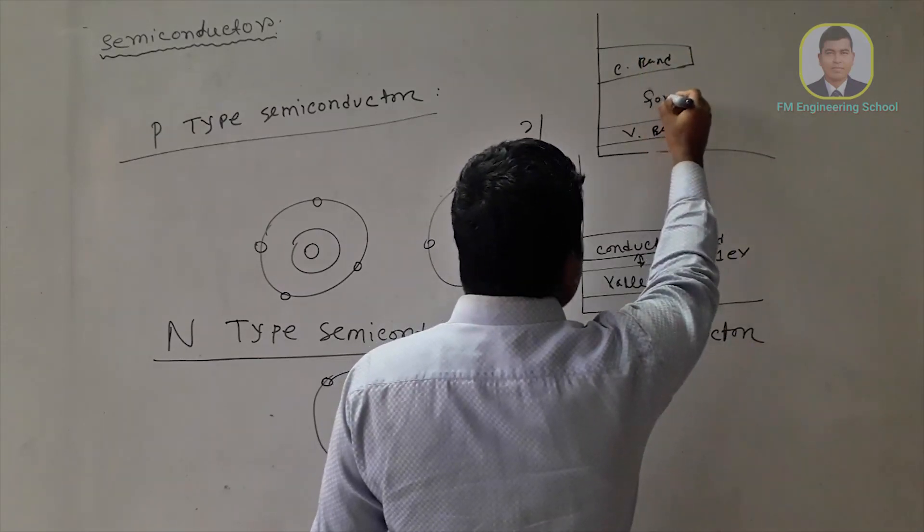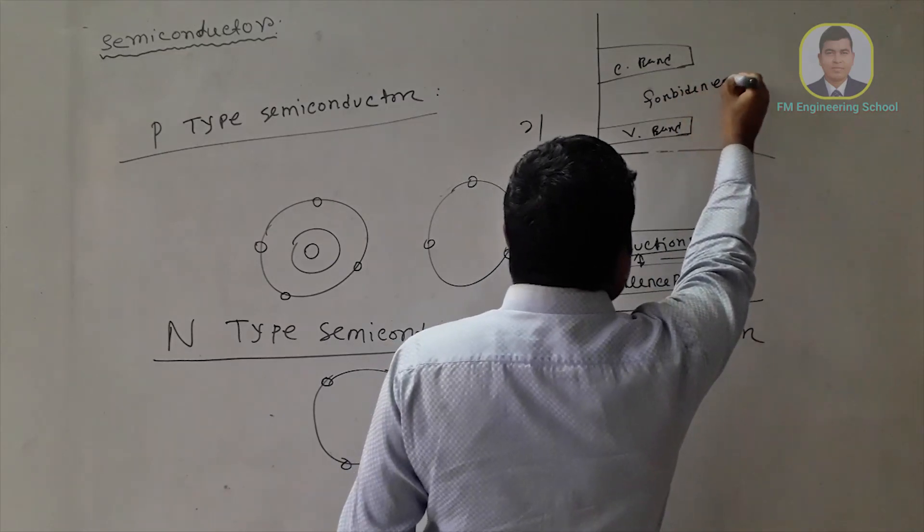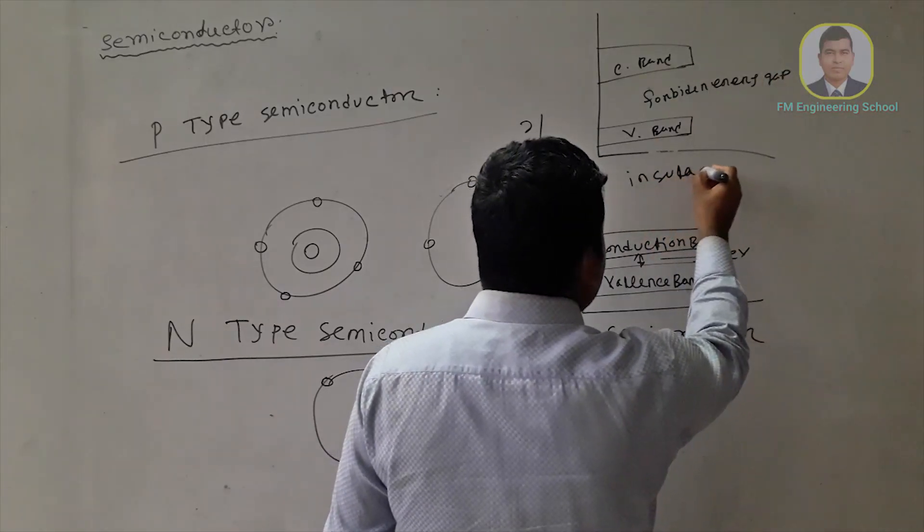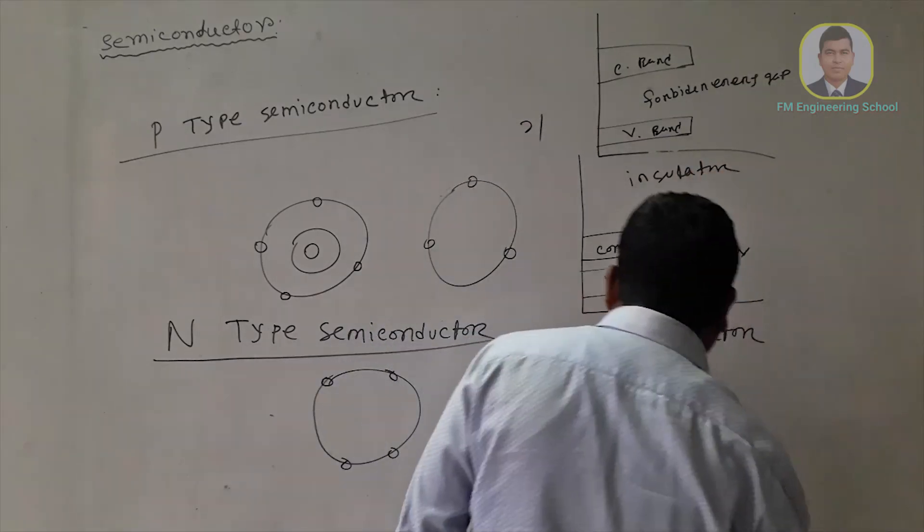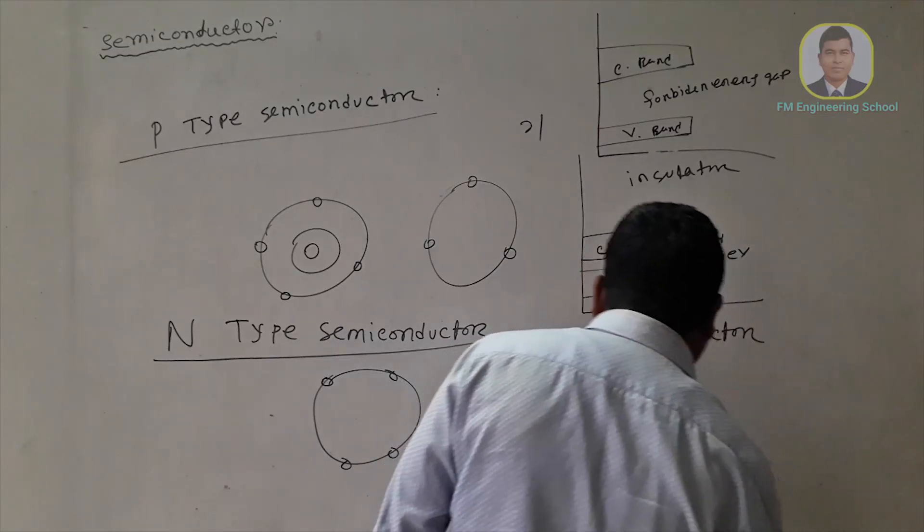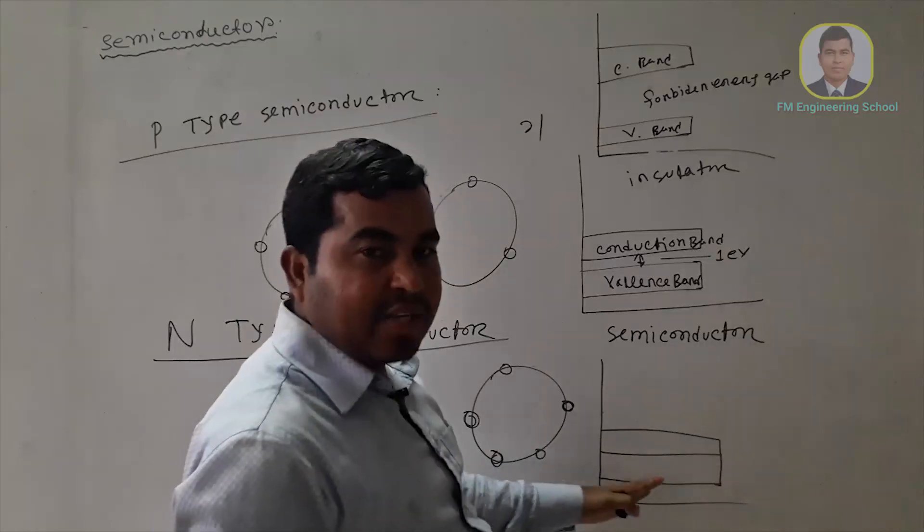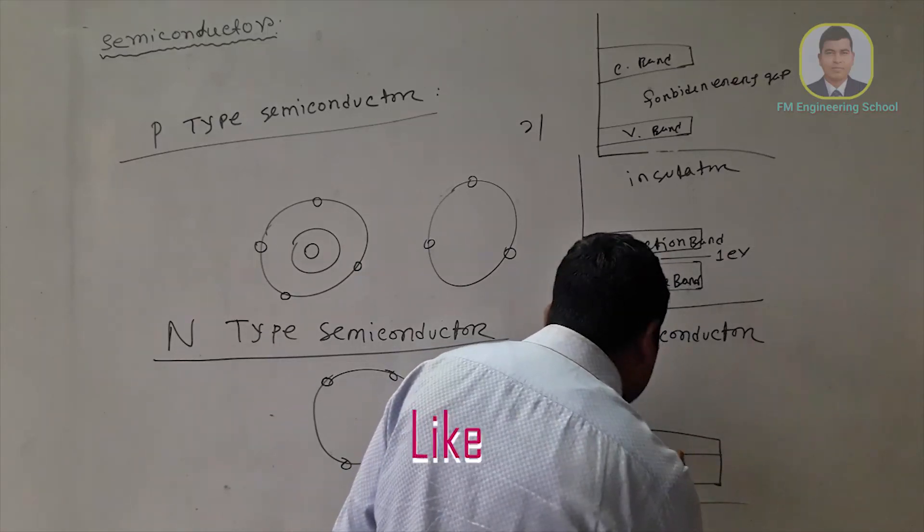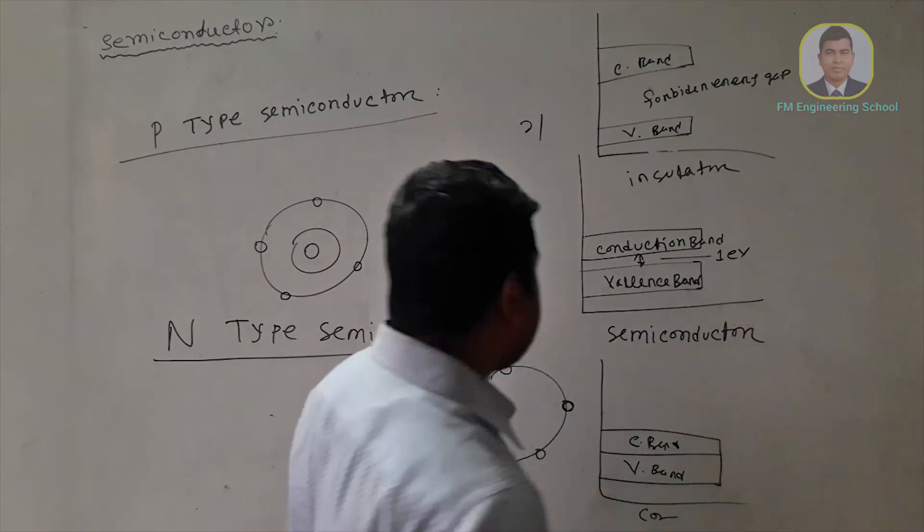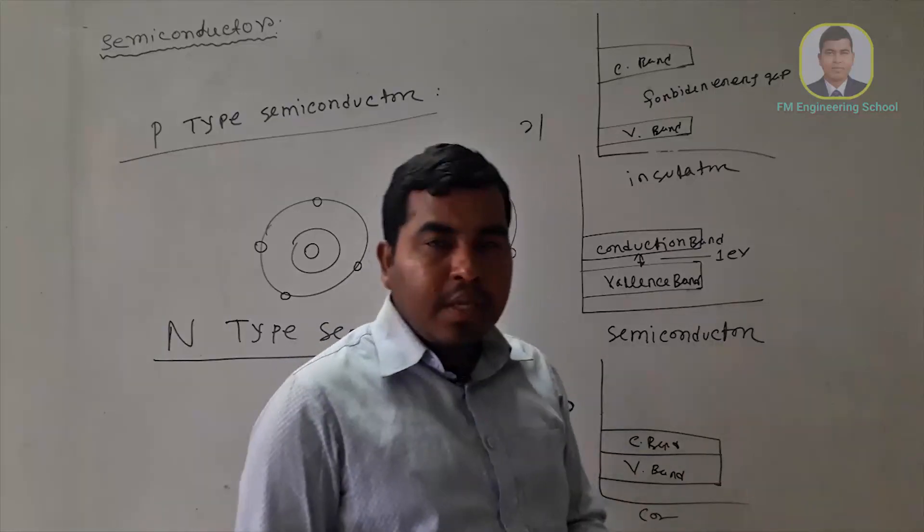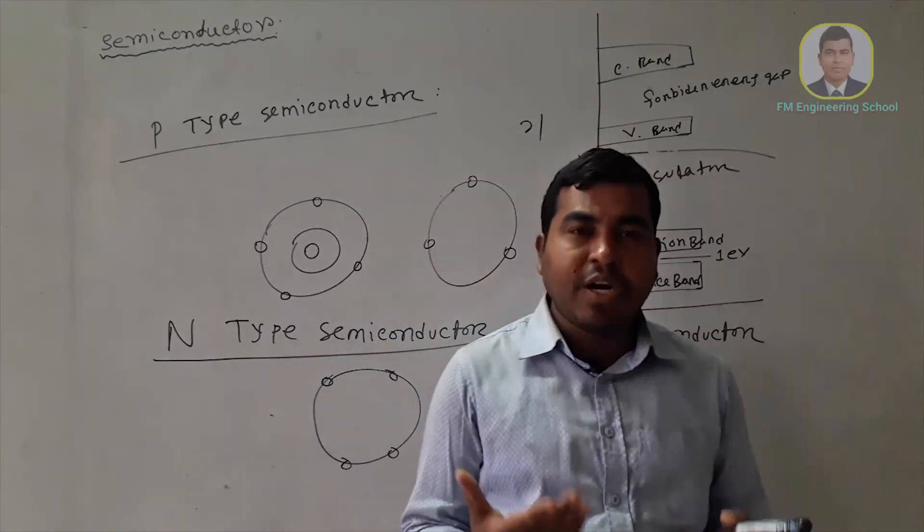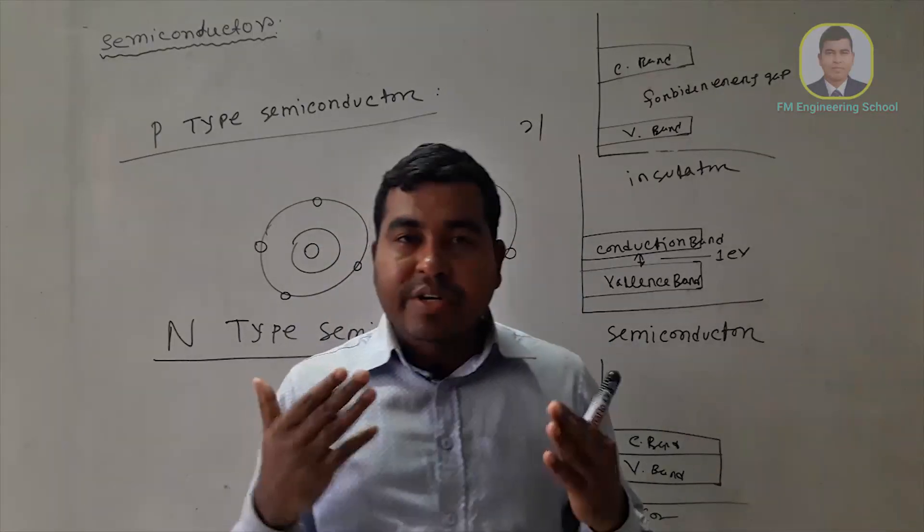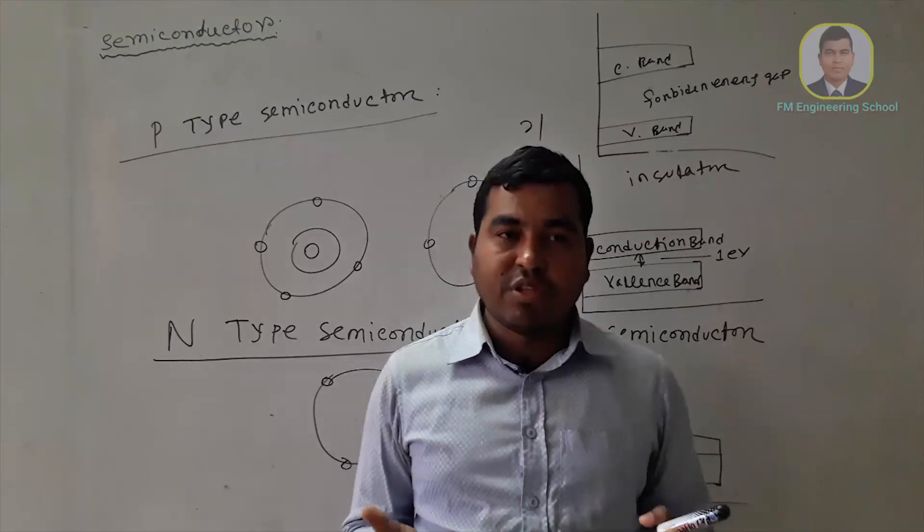This is the forbidden energy gap. This is the current problem. This is the conductor. The conductor is the valence band and the conduction band. This is the D band and the C band. This is the conductor. This is the semiconductor.